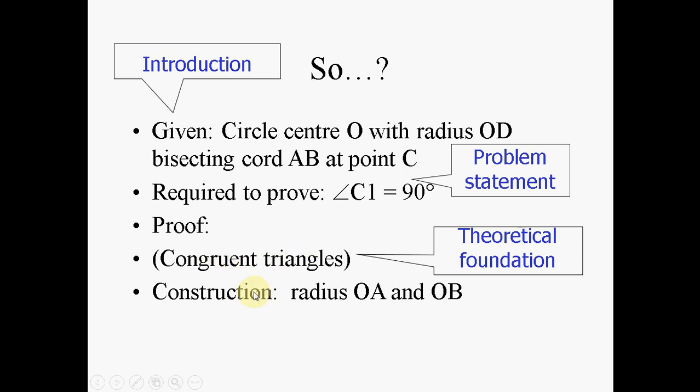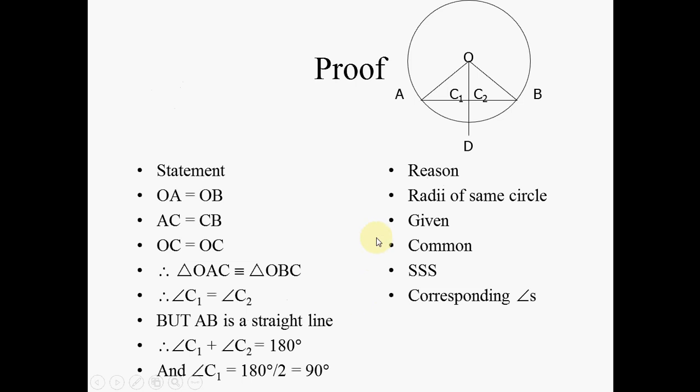And then you have a method. And that method is that you do an intervention: you construct radius OA and you construct radius OB, and in that way you have constructed two triangles. And then once you've constructed that, you end up with three findings. You find that that line is the same as that line, you find that these two lines are the same length, and you find that those two are common. So those are your findings.